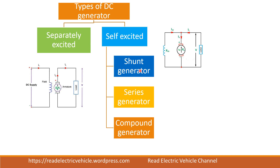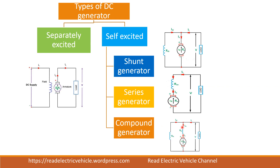Shunt means it is a parallel path. When the field winding is connected in parallel with the armature, we call it a shunt generator. Compound means it is a combination — it has a series field as well as a shunt field, so two fields will be there, and we call it a compound generator. In compound generator, there are two types: long shunt and short shunt compound generator. In the long shunt compound generator, the armature and series winding are combined and then connected in parallel with the shunt field.